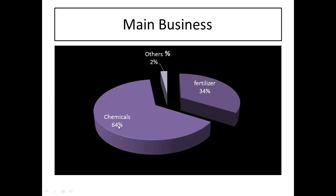Nowadays we know the chemical segment is booming in India — everybody is bullish on the chemical segment because China is reducing its bulk chemical production due to pollution-related issues. So obviously the Indian chemical sector will boom, and chemical company stocks are booming. We expect this company's chemical business will also boom. On the fertilizer side, India is mainly an agriculture-based economy and around 16% of GDP depends on agriculture only.